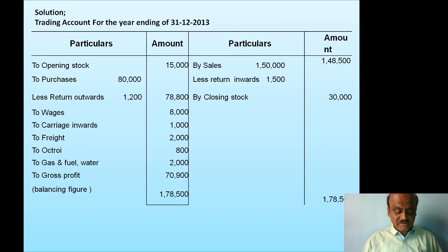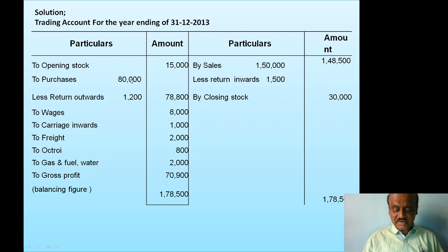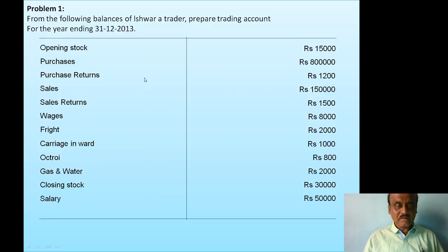So purchases are 80,000. Now let us prepare the trading account for the year ending 31st December 2013. The format has a particulars column, an amount column on the debit side, and a particulars column and amount column on the credit side. The first item on the debit side is opening stock: 15,000. Next is purchases: 80,000.